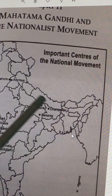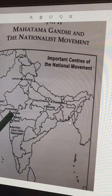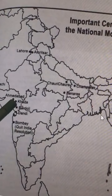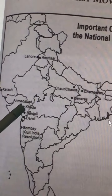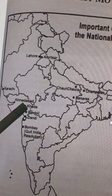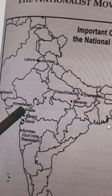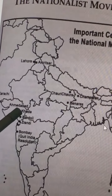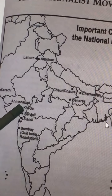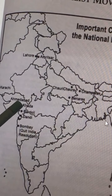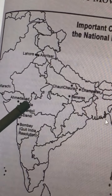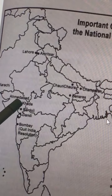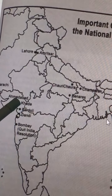The next important revolt led by Mahatma Gandhi is Kheda, where he led the revolt for peasants because they were highly taxed. The peasants invited him to lead the revolt. This is the second important revolt led by Gandhiji before he became a mass leader in 1920.